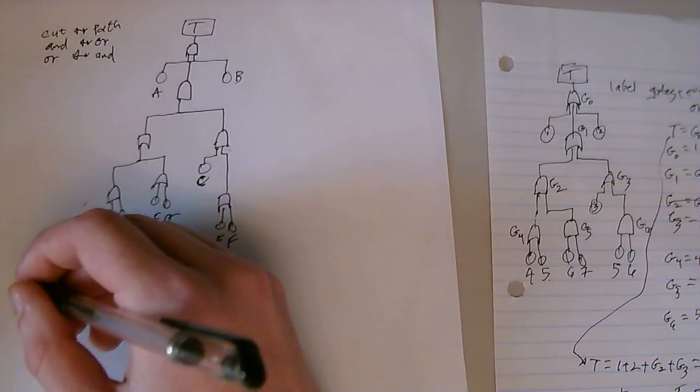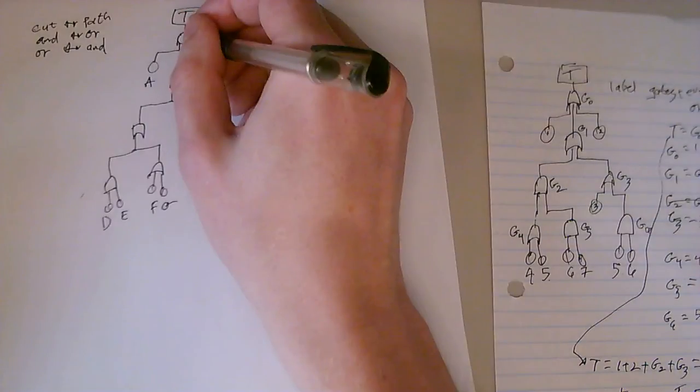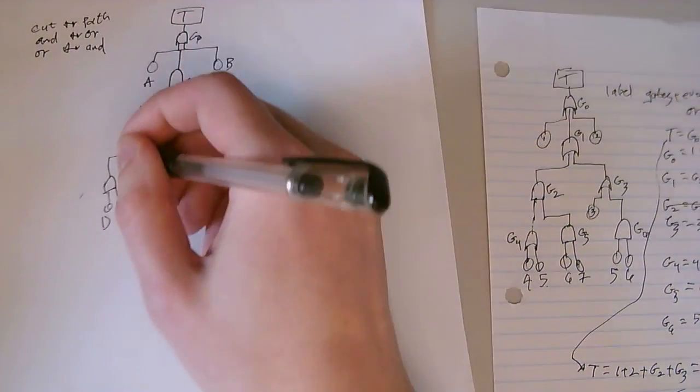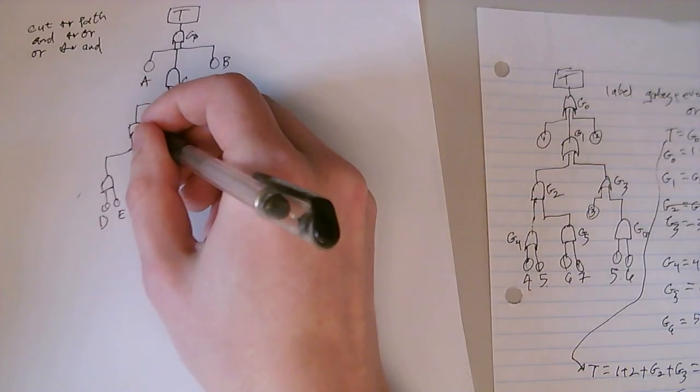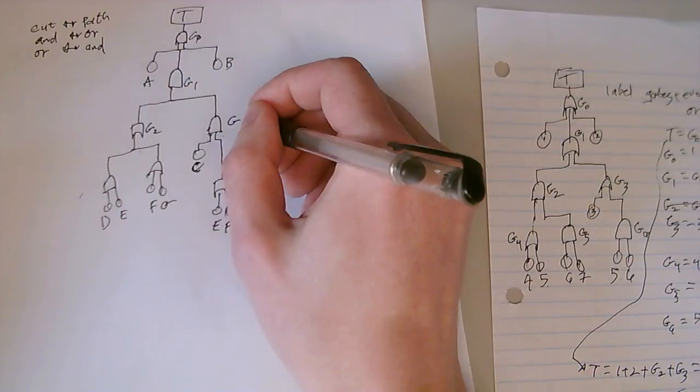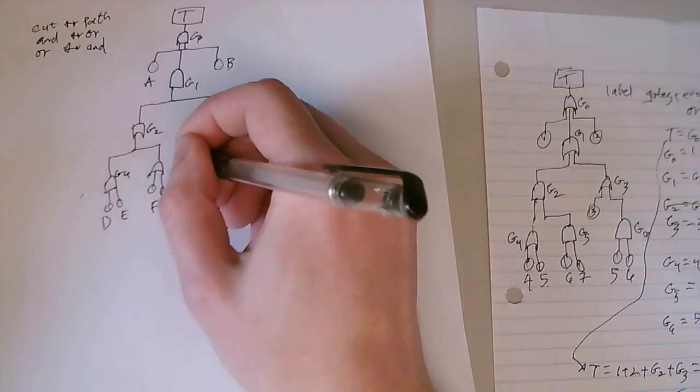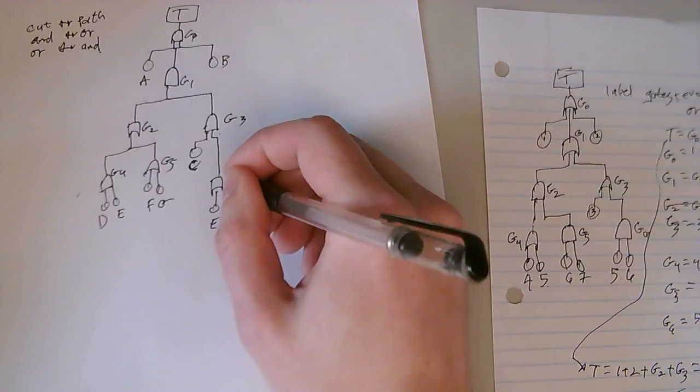So, we say, and this is G0, G1, G2, G3, G4, G5, and G6.